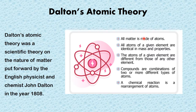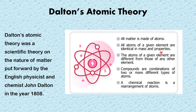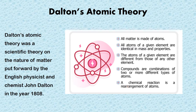Now moving on, we'll be looking at Dalton's atomic theory. Dalton's atomic theory was a scientific theory on the nature of matter put forward by the English physicist and chemist John Dalton in the year 1808. Dalton's atomic theory states that all matter is made of atoms; all atoms of a given element are identical in mass and properties; the atoms of a given element are different from those of any other element; compounds are combinations of two or more different types of atoms; and finally, a chemical reaction is a rearrangement of atoms.